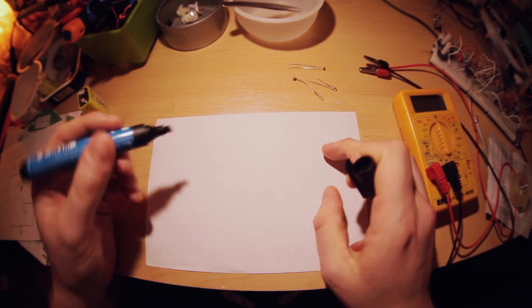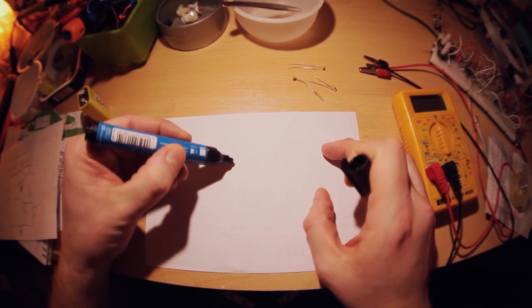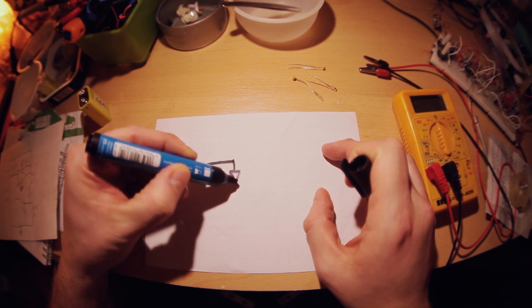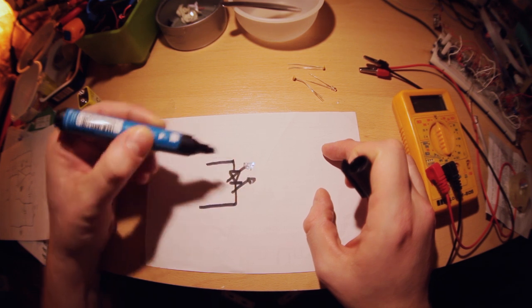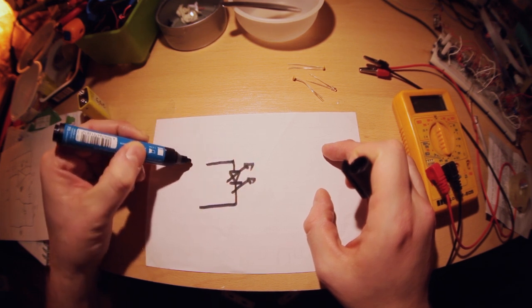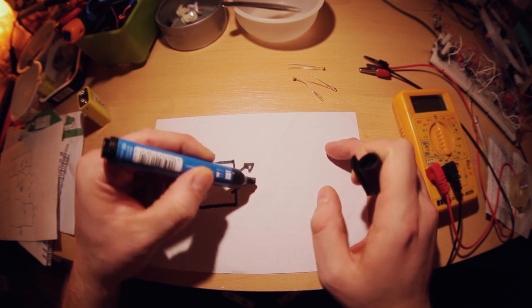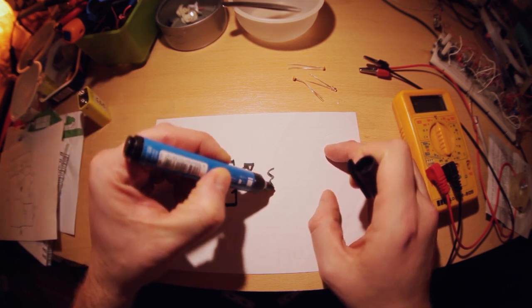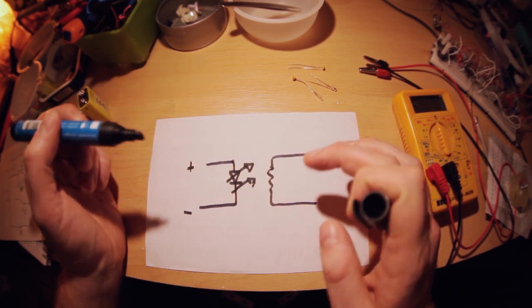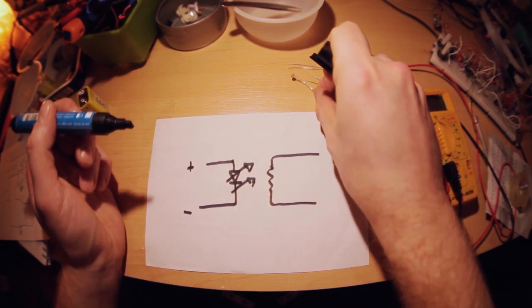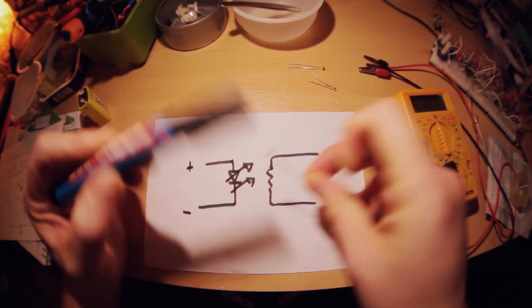The basic structure of a vactrol is like this: on one side we have an LED, light emitting diode, that emits light. You apply a voltage here and you turn on the LED to various intensities. And on the other side you have a light sensitive resistor, which is a resistor that changes its value depending on how much light is applied to the sensor.